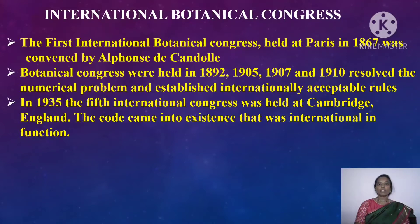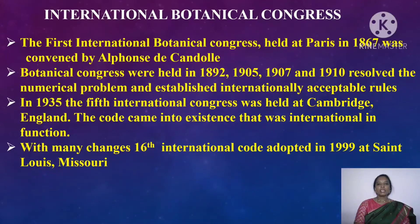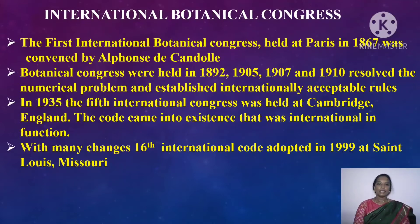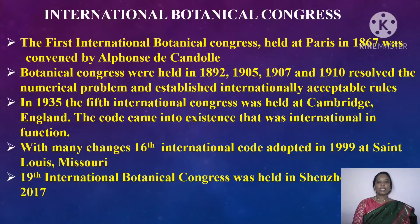In 1935, the 5th International Congress was held at Cambridge, England, and the code came into existence that was international in function. With many changes, the 16th International Code was adopted in 1999 at St. Louis, Missouri. The 17th International Botanical Congress was held at Vienna in 2005, the 18th at Melbourne in 2011, and recently the 19th International Botanical Congress was held in Shenzhen in 2017.